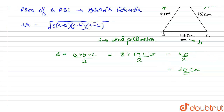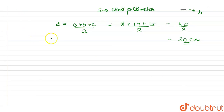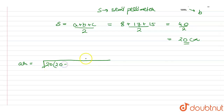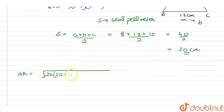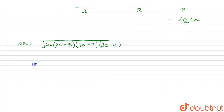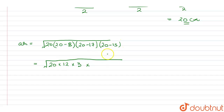Now we will find the area by placing the values of S, A, B and C in Heron's formula. The area equals the square root of 20 × (20 − 8) × (20 − 17) × (20 − 15), which simplifies to the square root of 20 × 12 × 3 × 5.